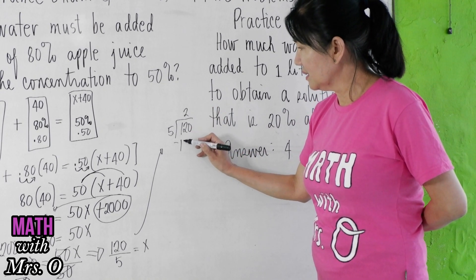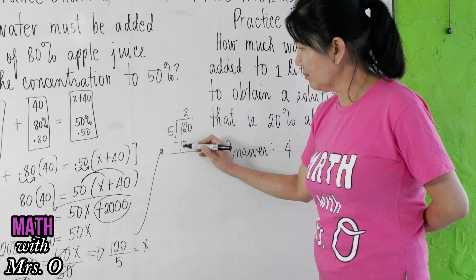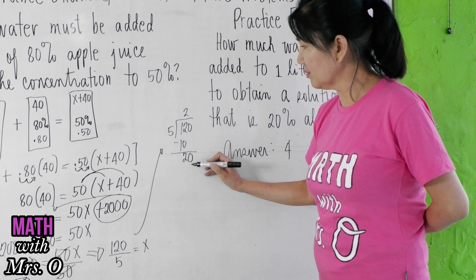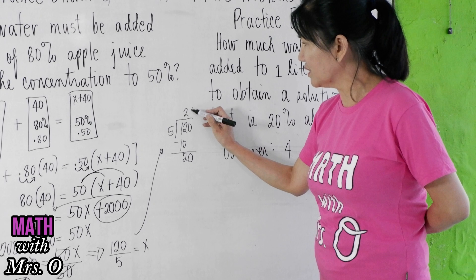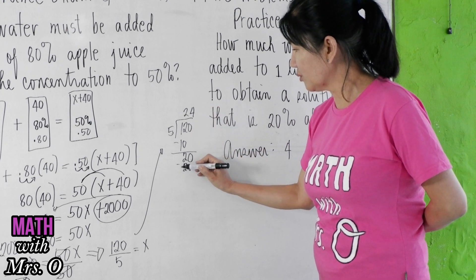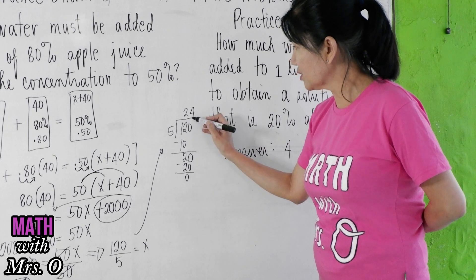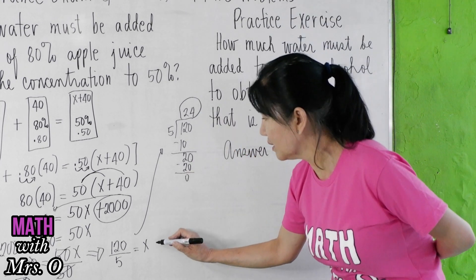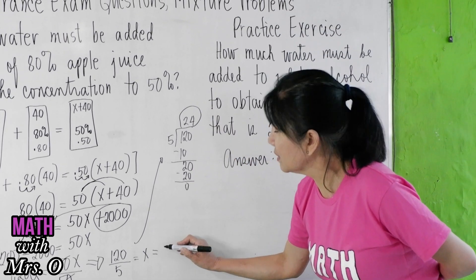Now let's solve that here. 120 divided by 5 gives us a 2. 2 times 5 is 10, 12 minus 10 is 2, bring down 0. 20 divided by 5 is 4. 4 times 5 is 20, 20 minus 20 is 0. So we have 24.